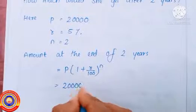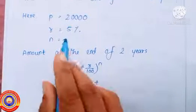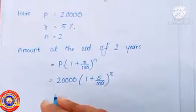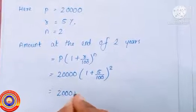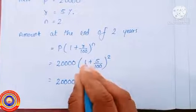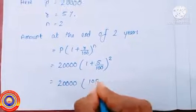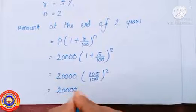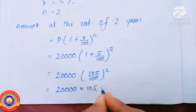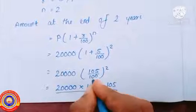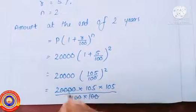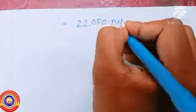That is twenty thousand into one plus five by hundred, the whole raised to two. That equals twenty thousand into one hundred plus five divided by hundred, the whole raised to two. That equals twenty thousand into one hundred and five divided by hundred, the whole raised to two. That equals twenty thousand into 105 by 100 into 105 by 100. The zeros get cancelled and the remaining is two into 105 into 105, that is equal to twenty two thousand and fifty rupees.